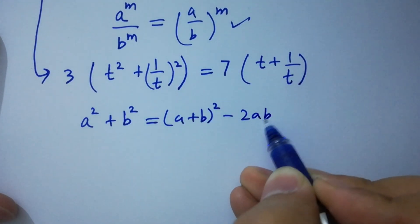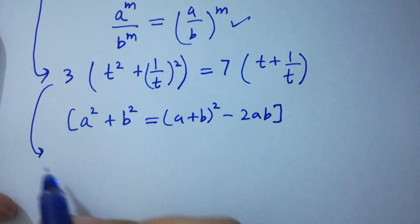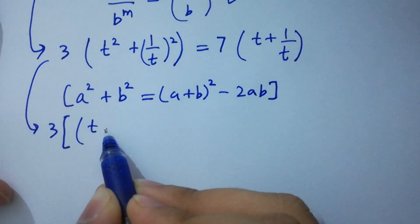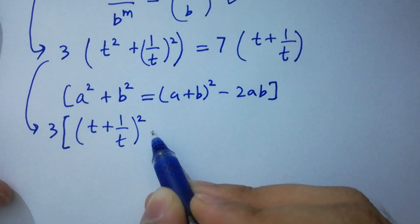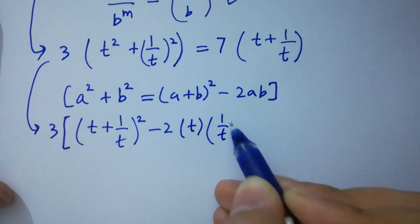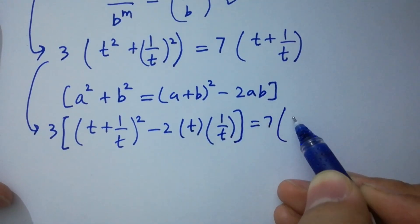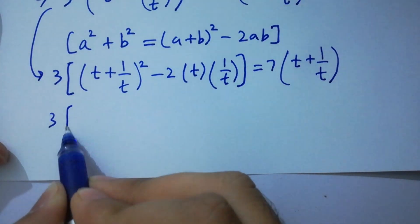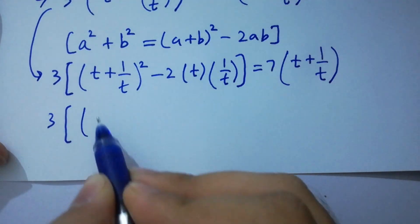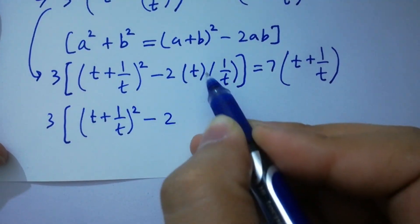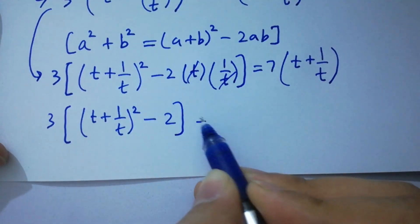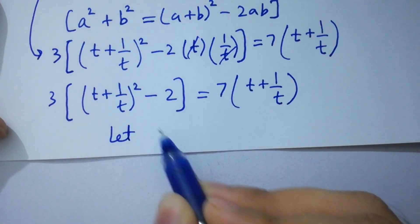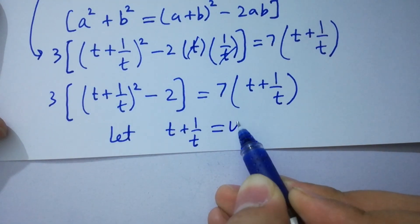Since a squared plus b squared equals a plus b whole squared minus 2ab, we have 3 times the quantity t plus 1 over t whole squared minus 2 times t times 1 over t. Since t and t cancel we get 2, equal to 7 times t plus 1 over t. Let t plus 1 over t equal to u.